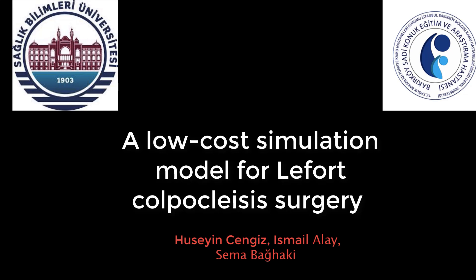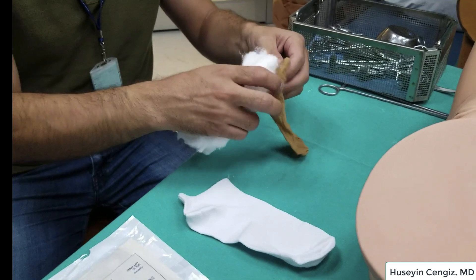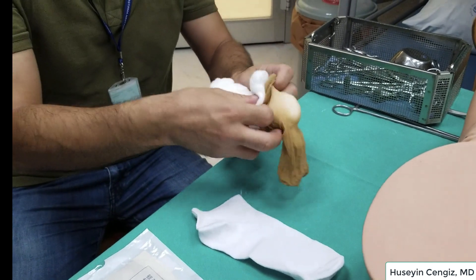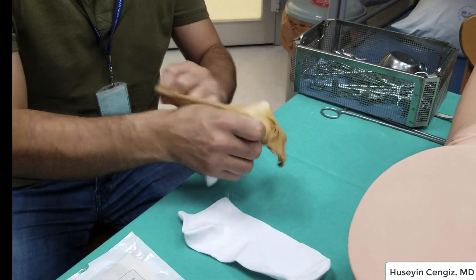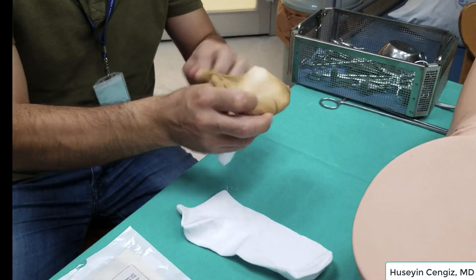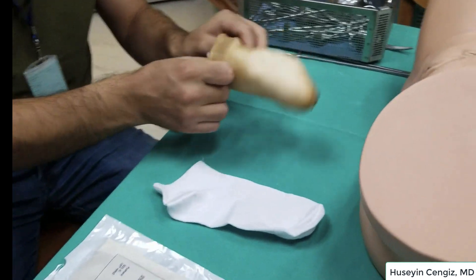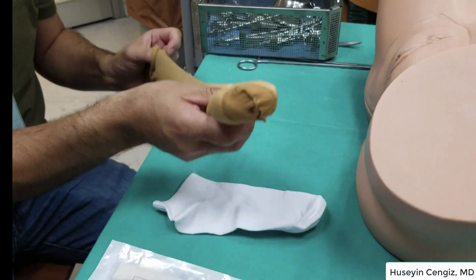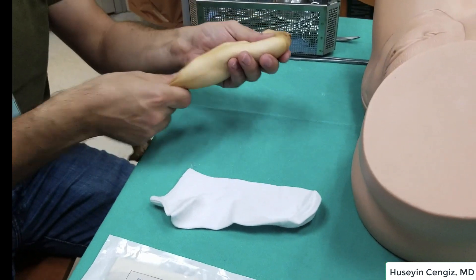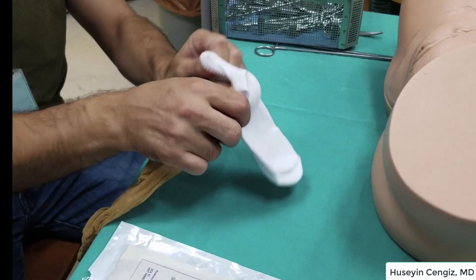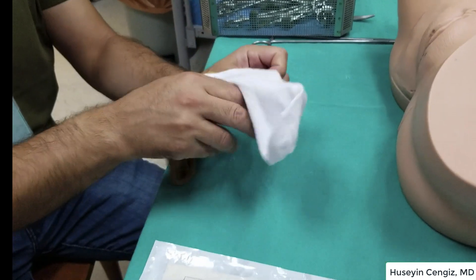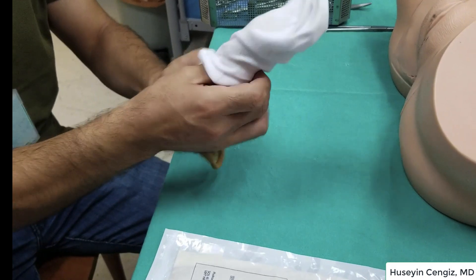A low-cost simulation model for Le Fort colpocleisis surgery. We first created a prolapse uterus by using easily accessible materials such as a pantyhose, cotton, glue, and a pair of socks.